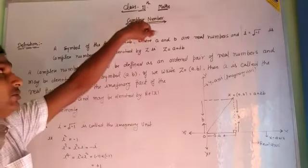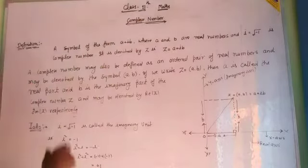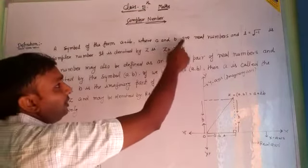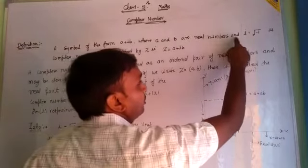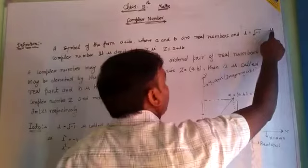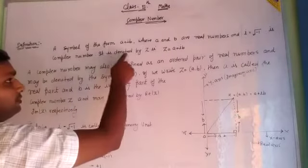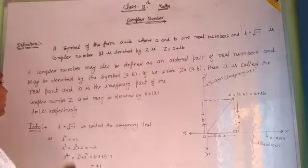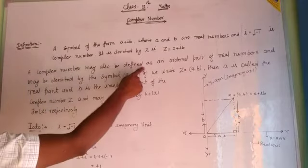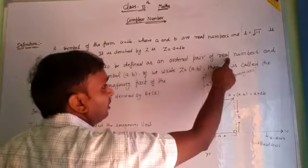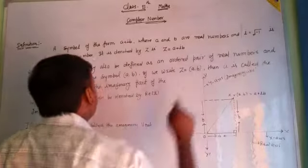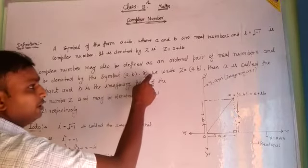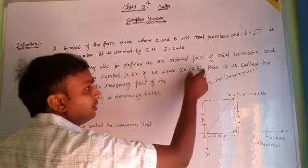Complex number: a symbol of the form a plus ib, where a and b are real numbers and i is equal to the square root of minus 1. Each complex number is denoted by the symbol capital Z, that is z equals a plus ib. A complex number may also be defined as an ordered pair of real numbers, denoted by the symbol (a, b). If we write z equal to the ordered pair (a, b),